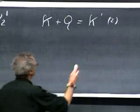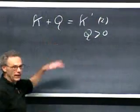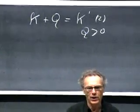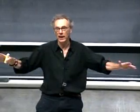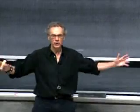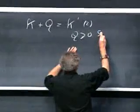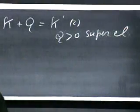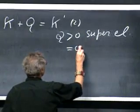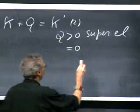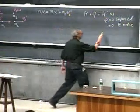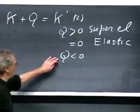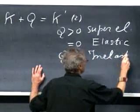If Q is larger than zero, you have gained kinetic energy — that is possible. We had two cars connected by a spring; we burned the wire and each went off in opposite directions. There was no kinetic energy before, but there was kinetic energy afterwards — the potential energy of the spring converted into kinetic energy. We call that a super-elastic collision; it could be an explosion. If Q equals zero, that is a very special case — we call that an elastic collision. And then there is the inelastic collision when you lose kinetic energy, Q less than zero.